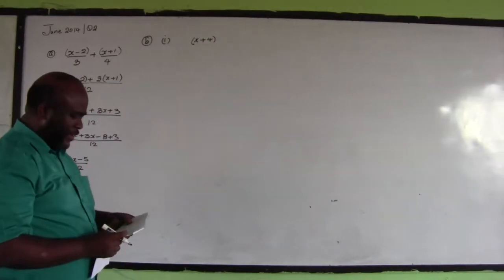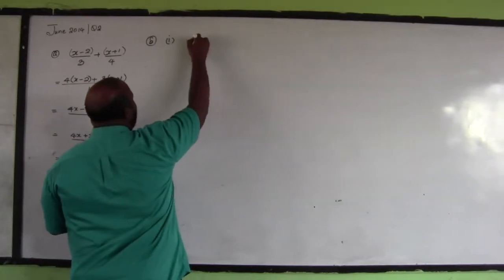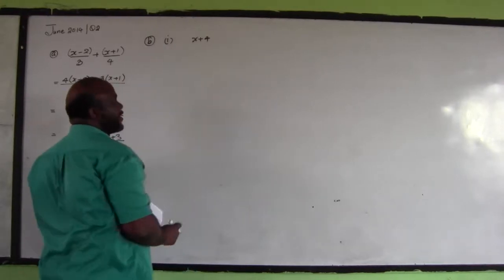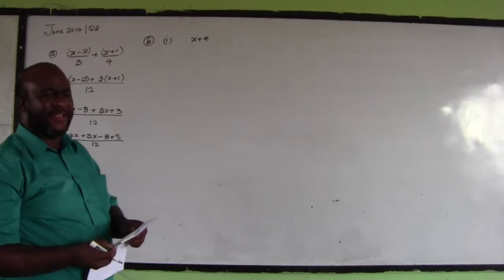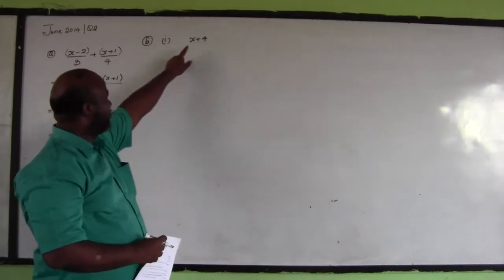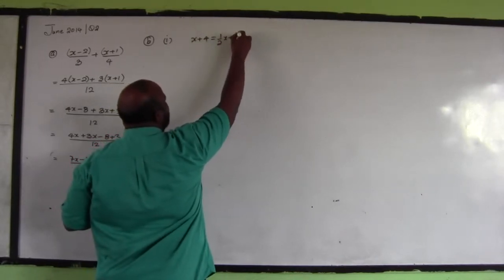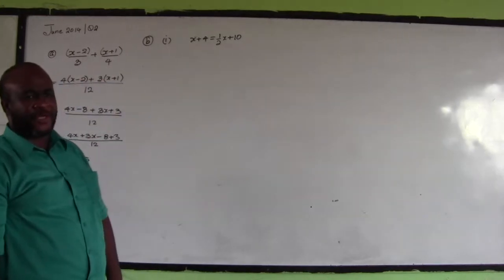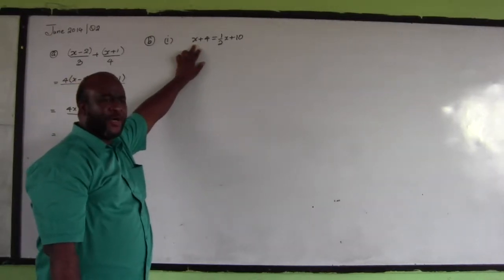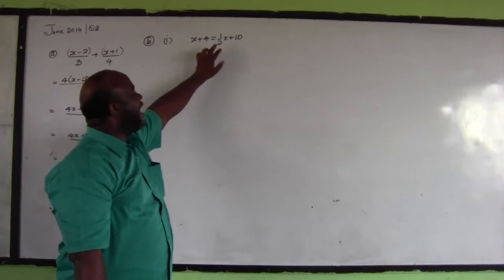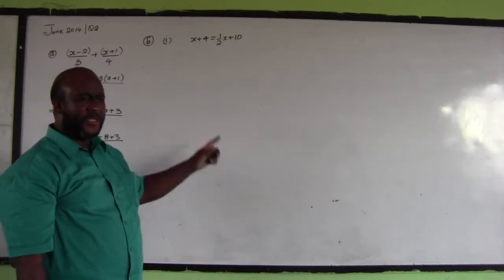So the result is the same, which means this is equal to a half x plus 10. When 4 is added to a certain number, the result is the same as halving the number — that is, multiplying by a half — and then adding 10.